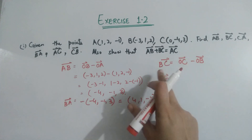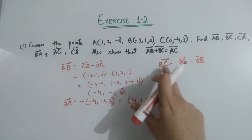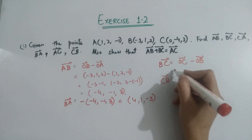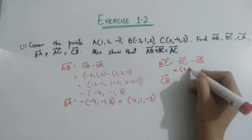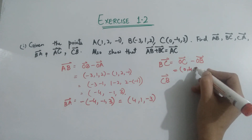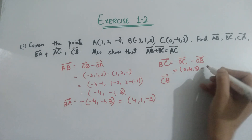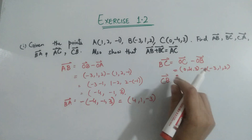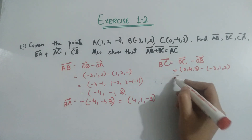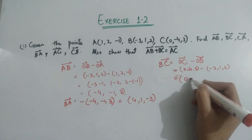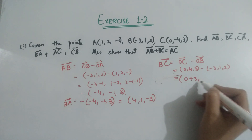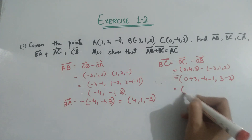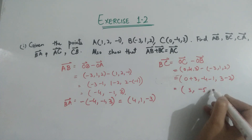C is the final point and B is the initial point, so it's final minus initial. Putting values of C minus B: (4, 3) minus (minus 3, 1) and 2. After simplifying you get 0 plus 3, minus 4 minus 1, and 3 minus 2, giving BC as (3, minus 5, 1).